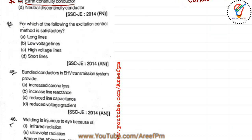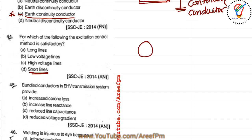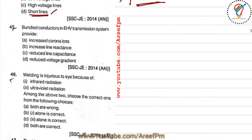Question 44: which excitation control method is satisfactory? The excitation control method is satisfactory only for relatively short lines. It is not suitable for long or medium transmission lines, because varying the alternator excitation to increase system voltage is not economical for long lines. The answer is D.